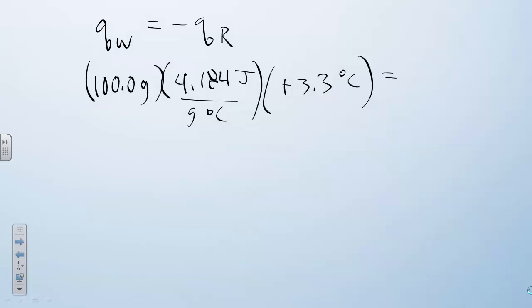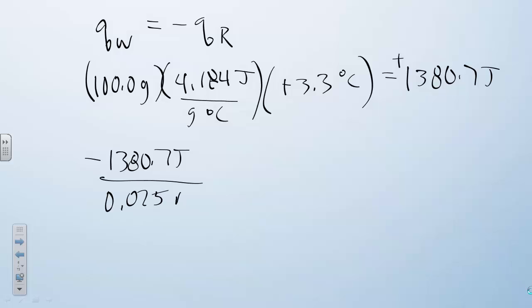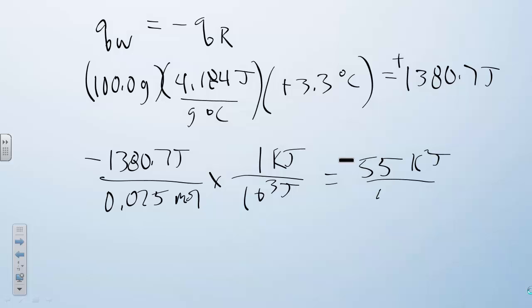When you work this out, you find that the amount of joules absorbed by the water is 1,380.7 joules — and that's positive. The water absorbs heat because the reaction releases heat, so the reaction released 1,380.7 joules by reacting 0.025 moles. When we work this out and convert to kilojoules, rounding to two sig figs, we get 55 kilojoules per mole. It's more useful to report 55 kJ/mol because that number is general to all sodium hydroxide and hydrochloric acid reactions, whereas the raw joule value is specific only to our exact experimental design.